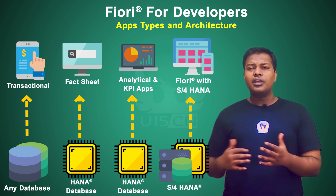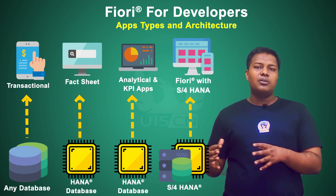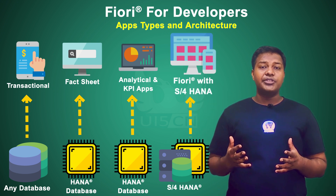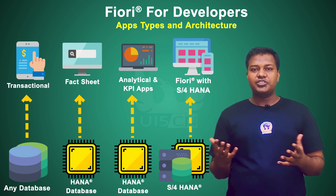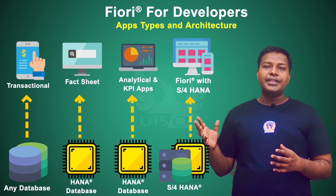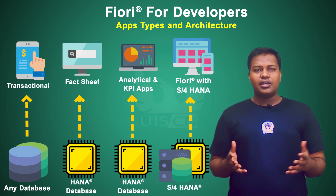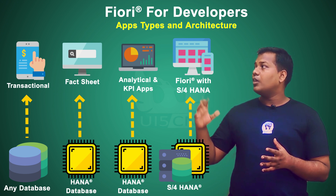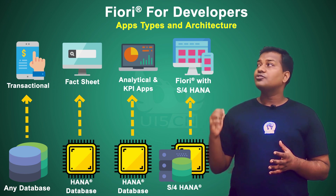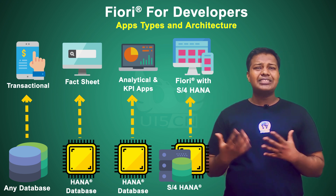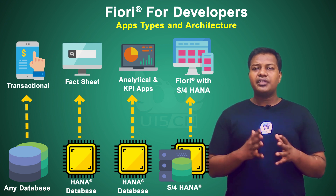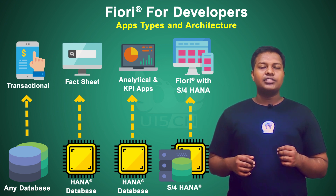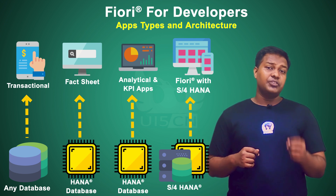Whether everything is going well or improvements can be made to certain processes — these are the three application types. The application running on S/4 HANA Business Suite has the capability to do all three kinds of operations. So these are the four broad categories of applications you will see in the market today and will need to work on. In the next section, we will understand from an architectural standpoint how transaction, fact sheet, analytics, and S/4 HANA applications are placed together and how their architectures differ.